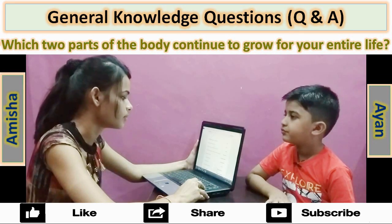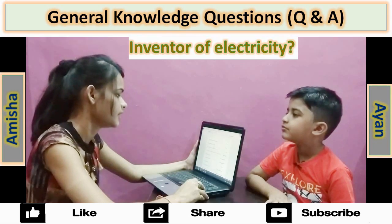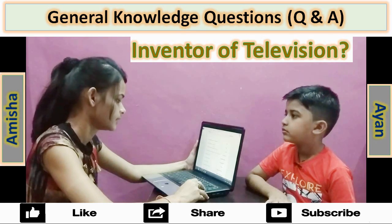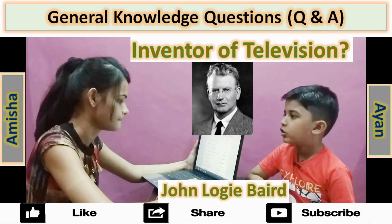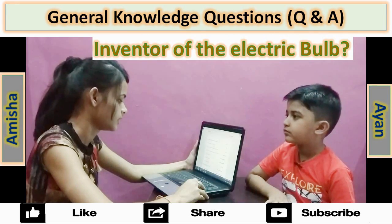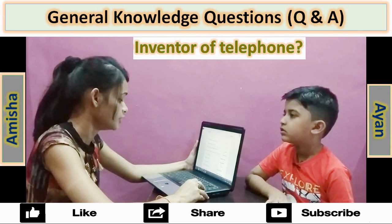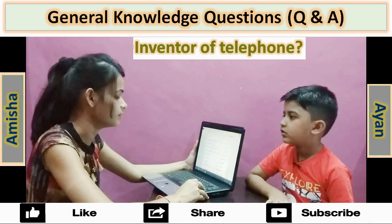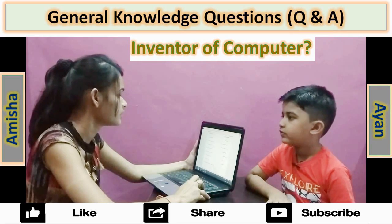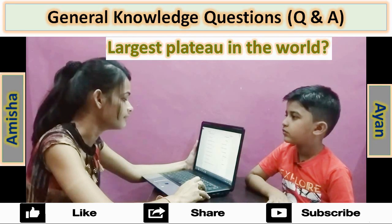Which two parts of the body continue to grow for your entire life? Nose and ears. Inventor of electricity? Benjamin Franklin. Inventor of television? John Logie Baird. Inventor of radio? Marconi. Inventor of the electric bulb? Thomas Edison. Inventor of telephone? Alexander Graham Bell. Inventor of the computer? Charles Babbage.